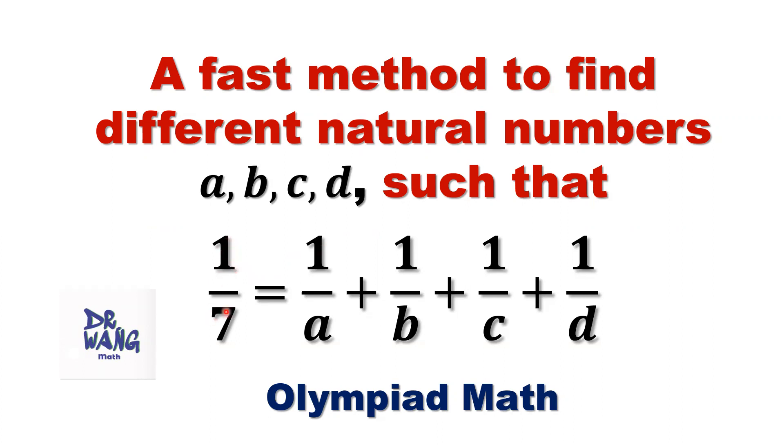Here, 1 over 7, maybe right hand side has 3 items or 4 items, 10 items. Here can be 7, 8, anything. Our method is very powerful, fast. It's always working.